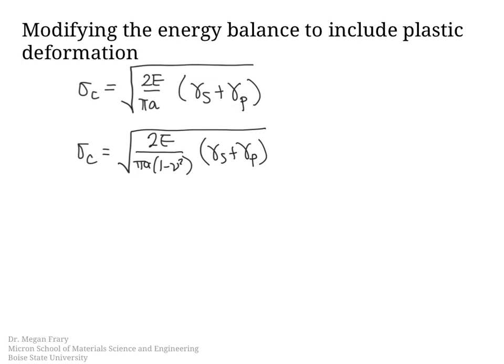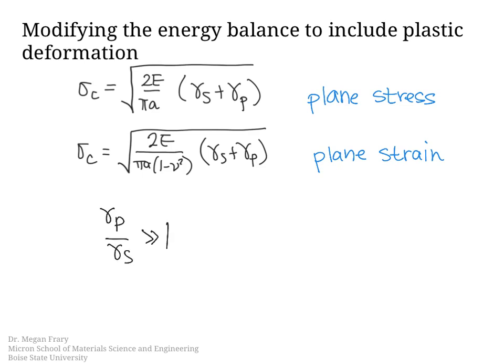Here we have the modified Griffith Criterion, which now takes into account the surface energy and the plastic work done. The top equation is for plane stress and the bottom is for plane strain. If the plastic work done is much greater than the surface energy term, we can rearrange the equation to find that now we have the plastic work done in the equation instead of the surface energy, along with material properties, crack geometry, and the critical stress at which the crack will propagate.